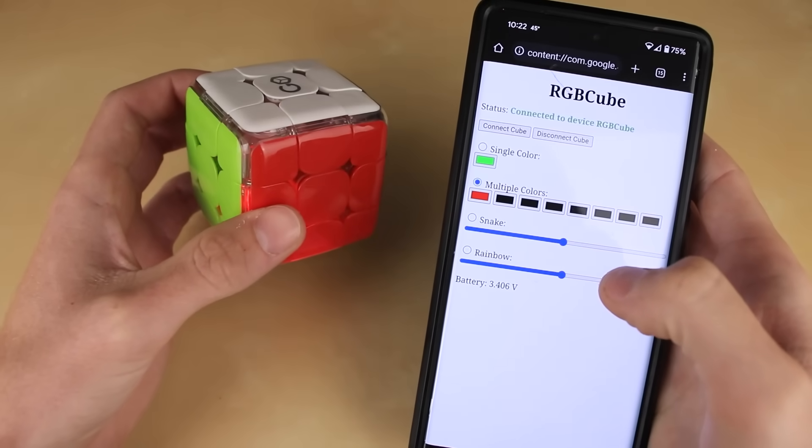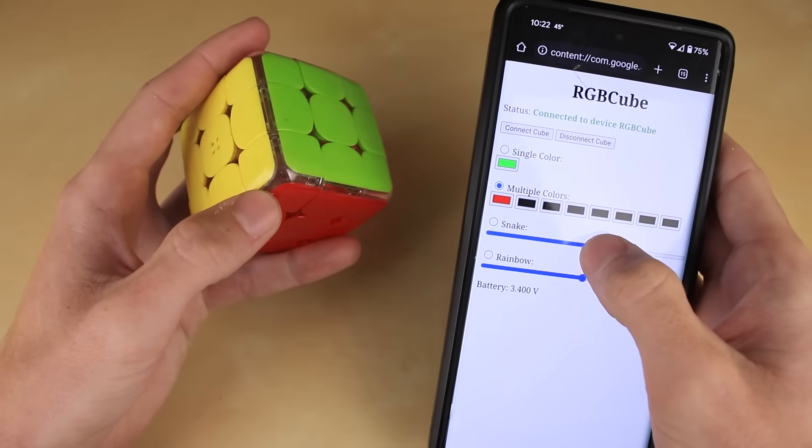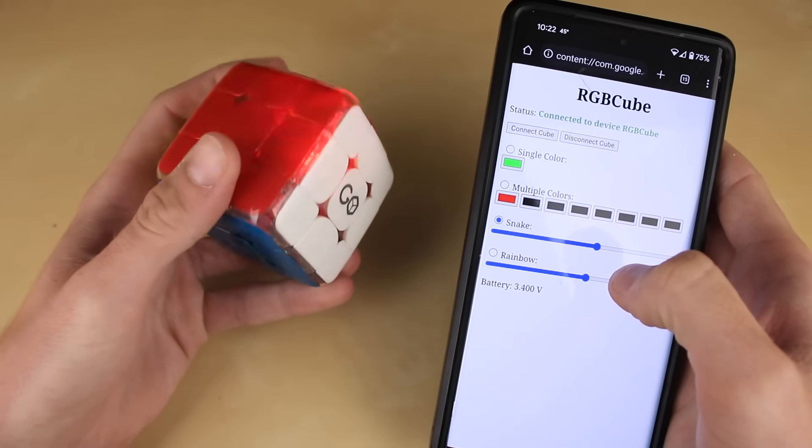And of course, we can do snake mode with whatever colors we want. So we could just have a single one lit up, and then enable snake mode. And there we go. It's moving its way around the cube.